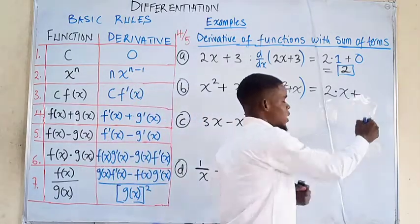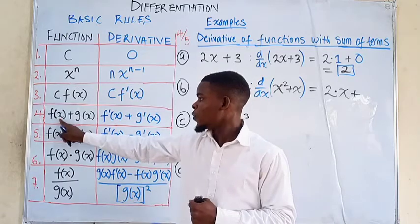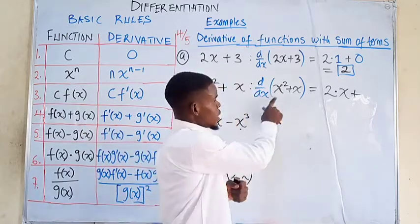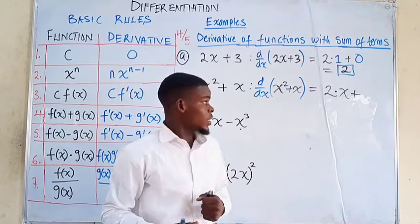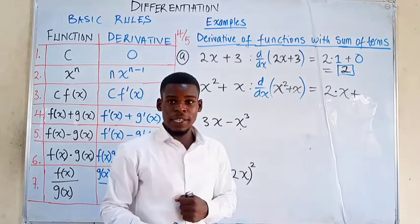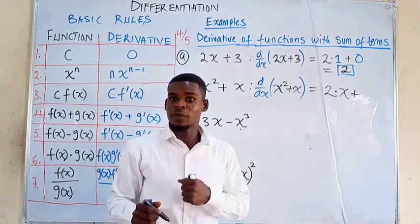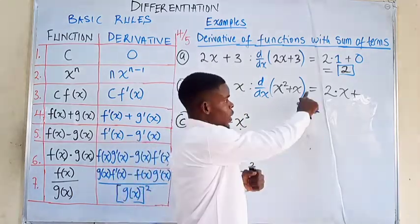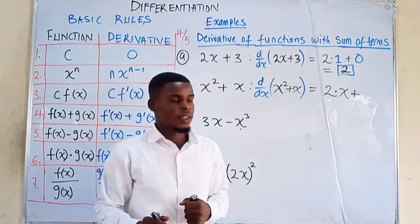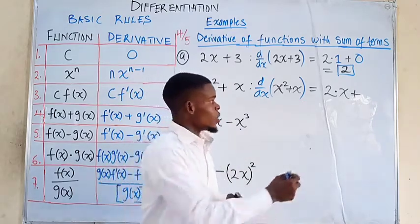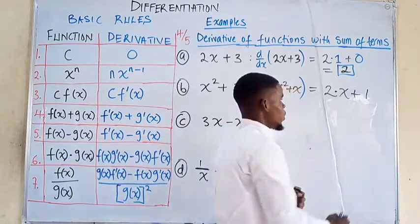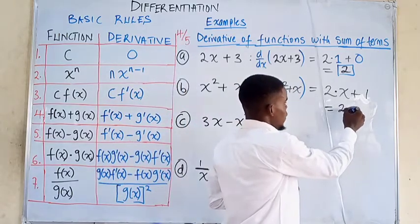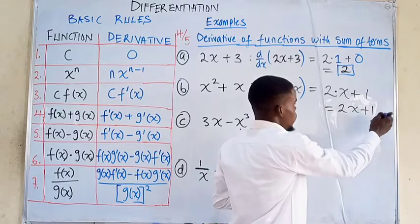Then by the sum rule we add the derivative of the second term x. The derivative of x with respect to x using the power rule — since the power of x is 1 — gives us 1. So simplifying, the derivative of x² + x is 2x + 1.